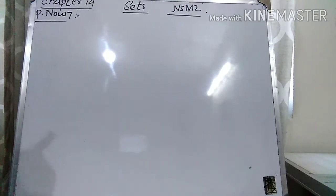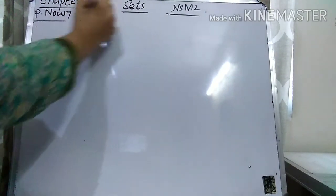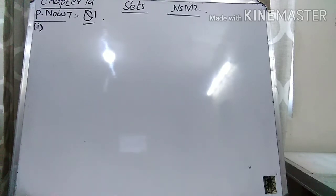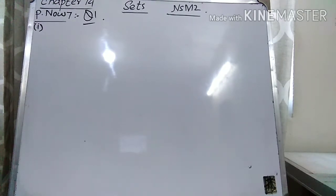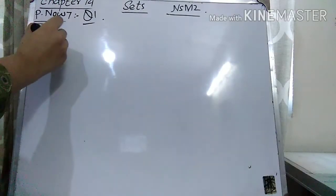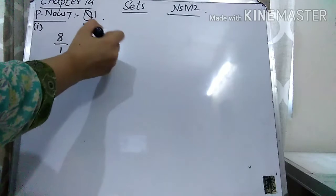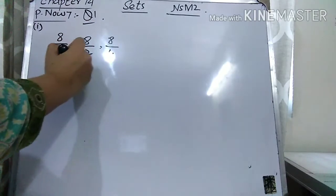I am going to explain question number 1, Part 1. They are saying list all the elements in C and D in set notation. What is C? C is given that X is a positive integer and a factor of 8. So you have to write down the positive factors of 8. What does factor mean? Factor means you have to see which numbers 8 is divisible by. 8 is divisible by 1, 8 is divisible by 2, 8 is divisible by 4. So these are the factors.